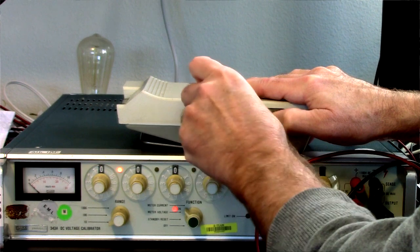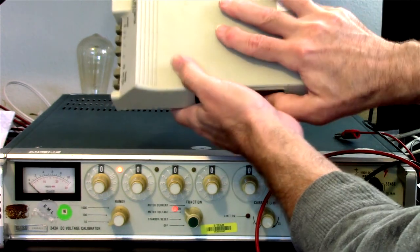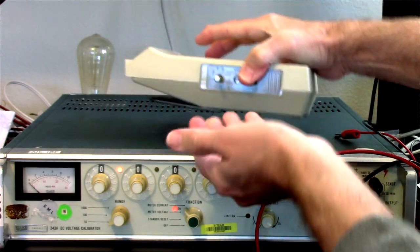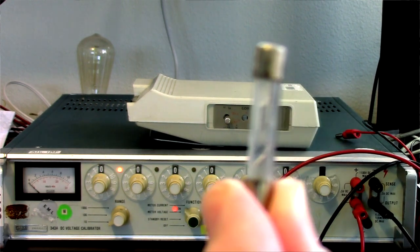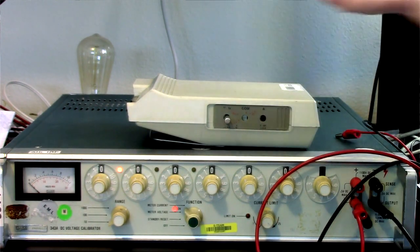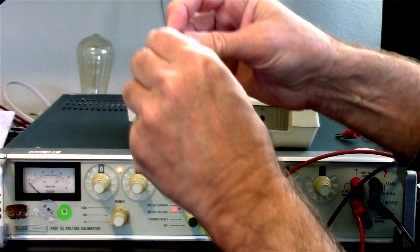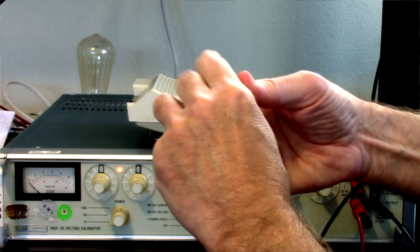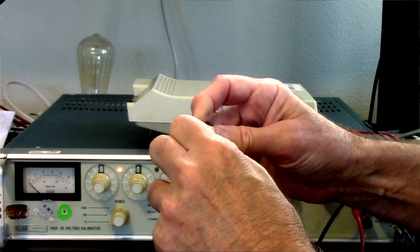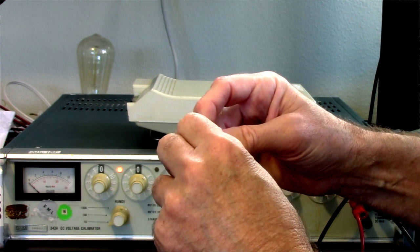To get at the fuses, we slide this cover. Oh, there they are. And that's, I guess, a 32 milliamp and that's a 1.5 amp. And we'll take a look at them. Well, here's the 1.5 amp. And I can see right now that that's blown. Focus. It's too close. Anyway, that one's blown. So that tells us something. And the 32 milliamp, well, it may well be blown as well. Yeah, kind of looks like it's blown.